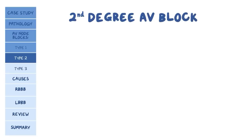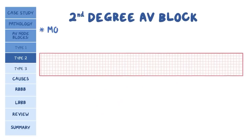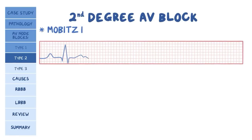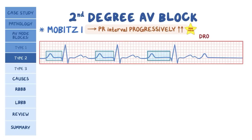Second degree AV block has two subtypes: Mobitz I and Mobitz II. In Mobitz I, each atrial impulse encounters a longer and longer delay until one of them doesn't make it through to the ventricles. The high-yield concept here is that on the ECG, this is reflected as the PR interval getting progressively longer and longer until all of a sudden the heart drops a beat.